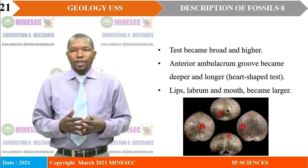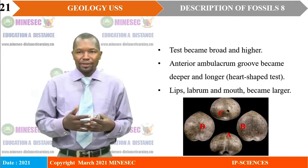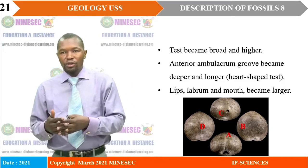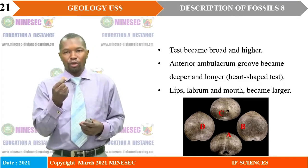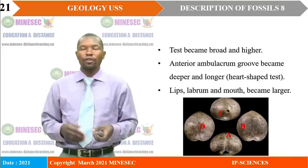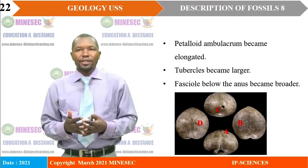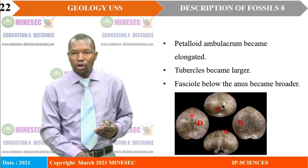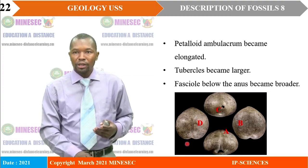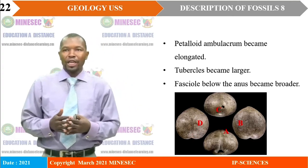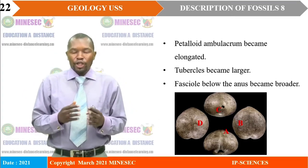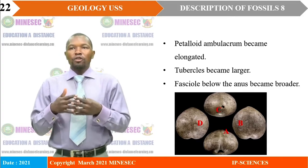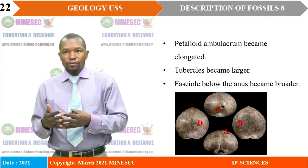Then the lips, labrum, and mouth became larger. The larger nature of the lips, labrum, and mouth caused the apical system to become very small since they were separated in the course of evolution. Also, the petaloid ambulacrum became elongated. Looking critically, you will see the five-fold arrangement — they became elongated. Then the tubercles became larger; that is why you have tubes and tube feet. The first oil became the anal and broader.